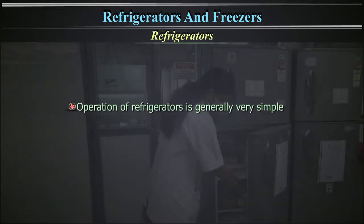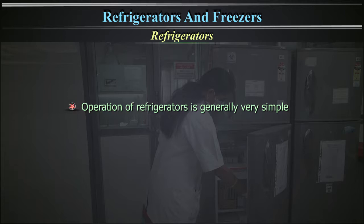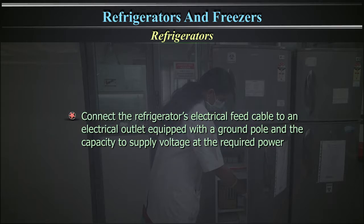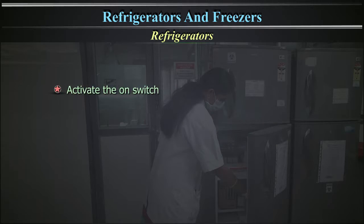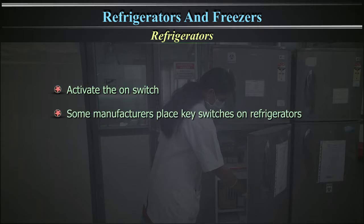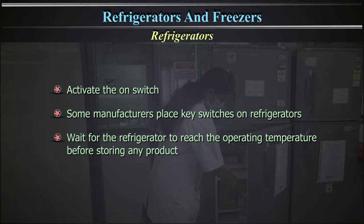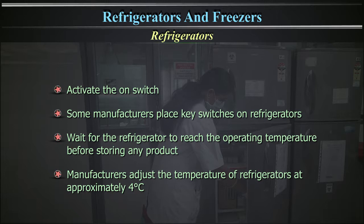The operation of refrigerators is generally very simple, and each manufacturer gives basic recommendations. 1. Connect the refrigerator's electrical feed cable to an electrical outlet equipped with a ground pole and the capacity to supply voltage at the required power. 2. Activate the on switch. Some manufacturers place key switches on refrigerators. Wait for the refrigerator to reach the operating temperature before storing any product. Manufacturers adjust the temperature of refrigerators at approximately 4 degrees Celsius.